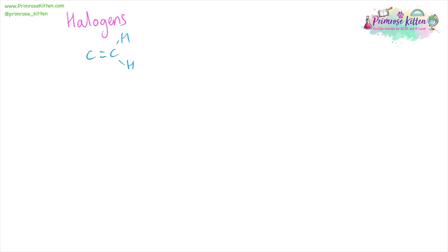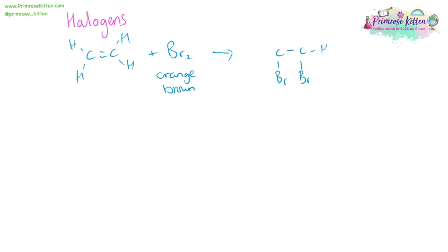When we are adding halogens — for example, bromine — if we add that to ethene, you'll know that bromine is an orange-brown colour. The bromine will be added across the double bond, and the solution will become colourless — not clear. Clear will not get you any marks. So hopefully you're familiar with this as the test for alkenes, but you also need to know the mechanism that goes behind it.